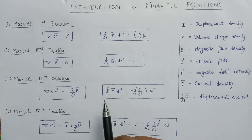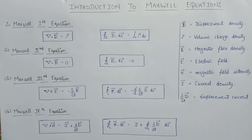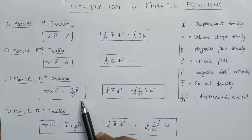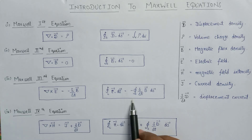Now let us discuss Maxwell's 3rd equation. According to the Maxwell 3rd equation, the curl of the electric field is equal to the negative of the time rate of change of magnetic flux. This is the Maxwell 3rd equation in point form or differential form, and this is the integral form representation for Maxwell's 3rd equation.